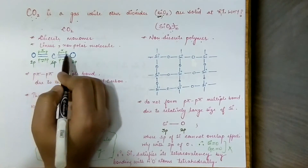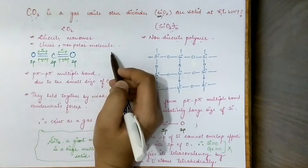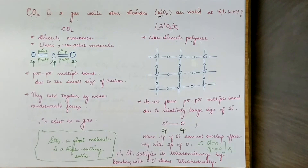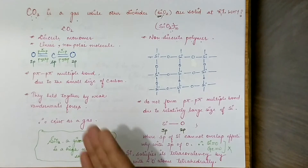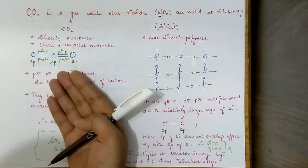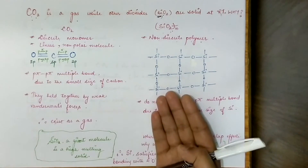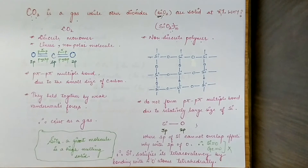Carbon dioxide is just a very simple linear non-polar molecule. We can draw the structure for carbon dioxide just like any other simple molecule, but when it comes to silicon dioxide, things are not as straightforward. So what is the difference in their bonding? Why is there this exception between carbon dioxide and silicon dioxide?